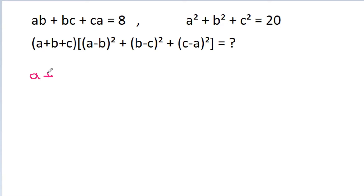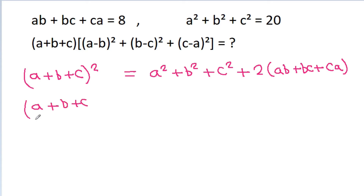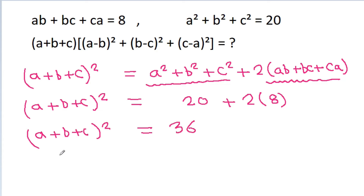We know that a plus b plus c whole square is equal to a square plus b square plus c square plus 2 times ab plus bc plus ca. So, a plus b plus c whole square is equal to a square plus b square plus c square, which is 20, plus 2 times ab plus bc plus ca, which is 8. That gives us 20 plus 16, which is 36.